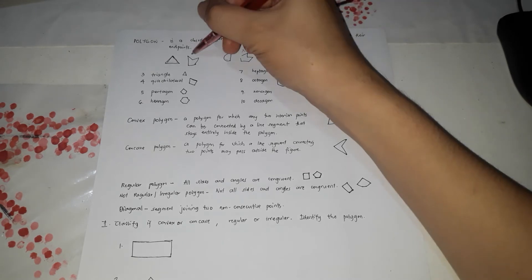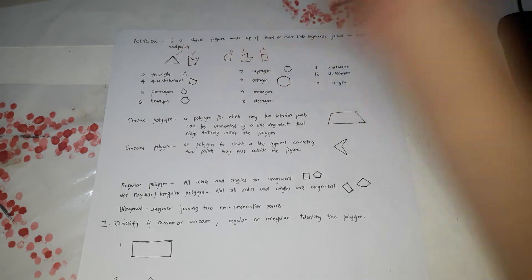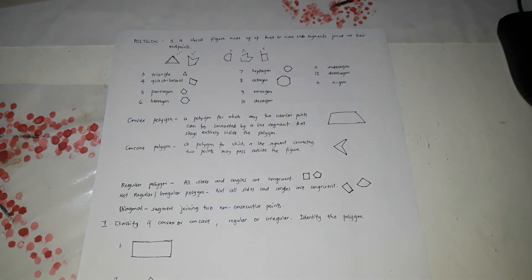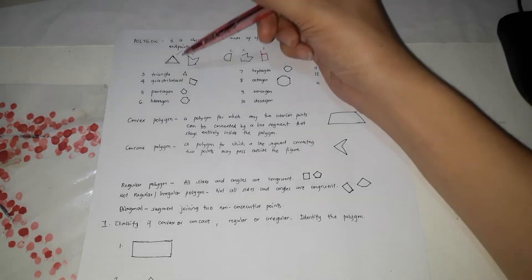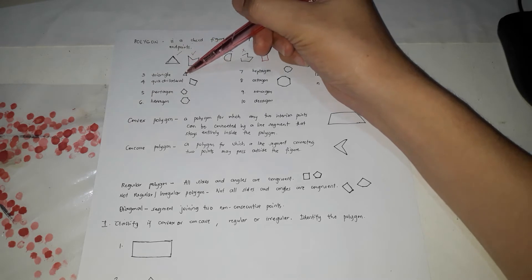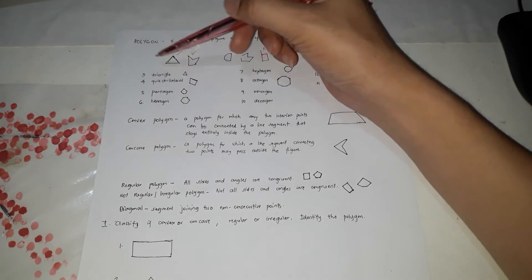This is not a polygon. This is a polygon, and this is a polygon with three sides. There are also kinds of polygons, and we're going to name each polygon based on the number of sides. We'll start with three, because you cannot form a polygon with only two sides. Three sides is called a triangle.